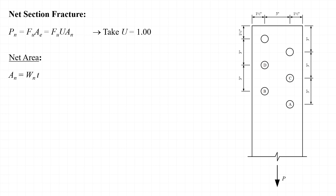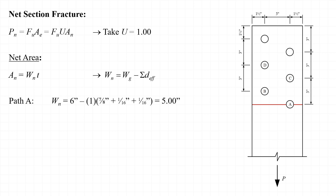When we evaluate the net area of the bar, A sub n is taken as W sub n times T, where W sub n is the net width of the plate — the gross width minus any material removed during fabrication of the holes. The first fracture path passes through bolt hole A. The net width is the gross width of 6 inches minus the material removed for one hole: a diameter of 7/8 inch for the bolt, plus 1/16 inch, plus a second 1/16 inch for material that could be damaged during fabrication. That gives a net width of 5 inches.